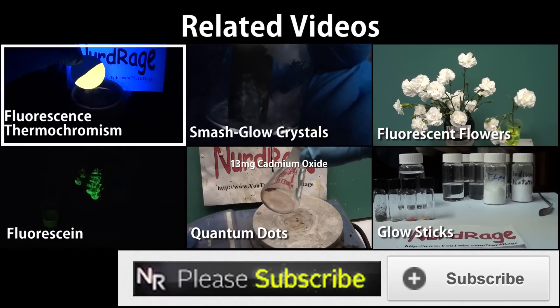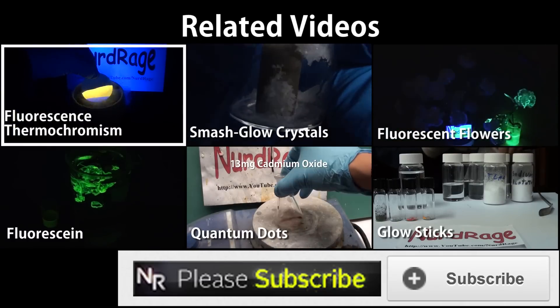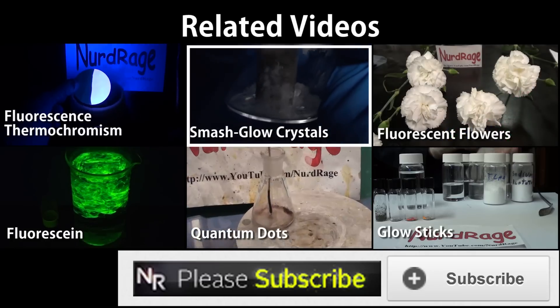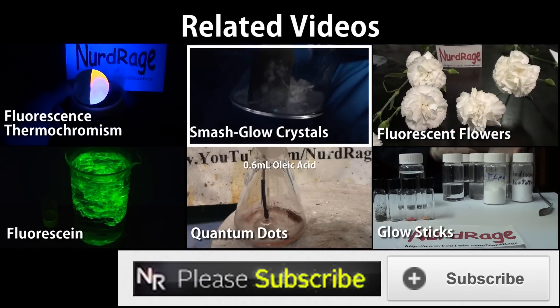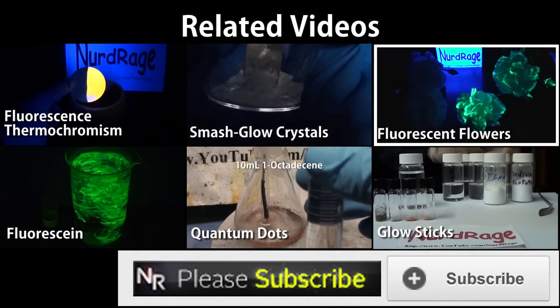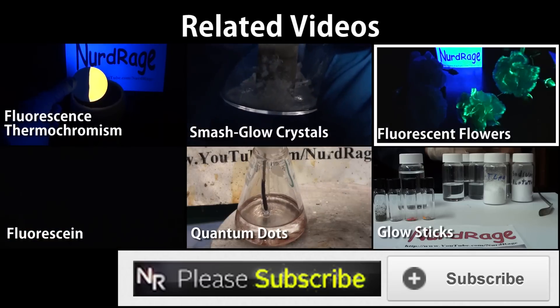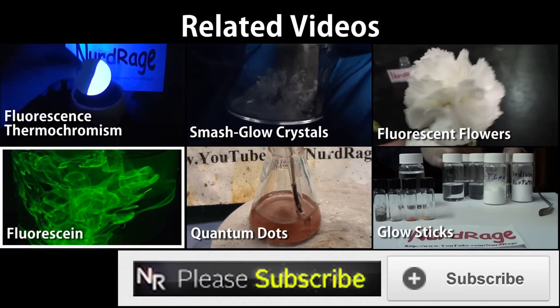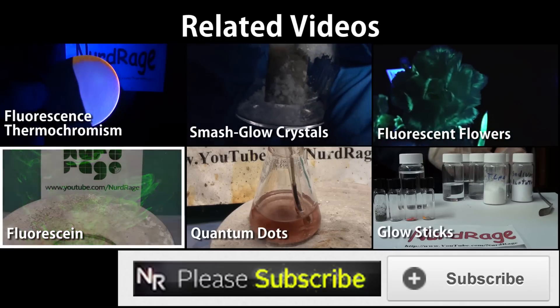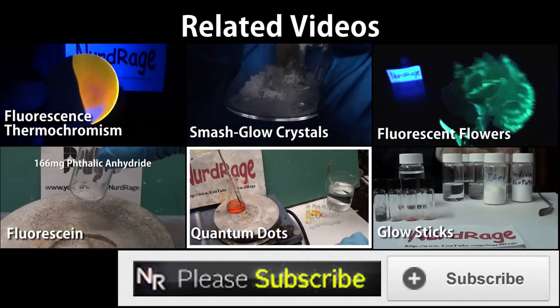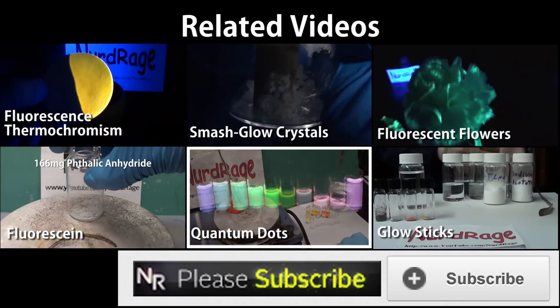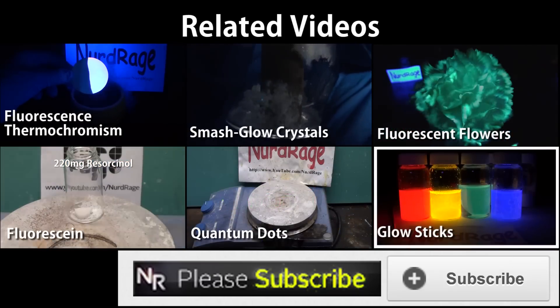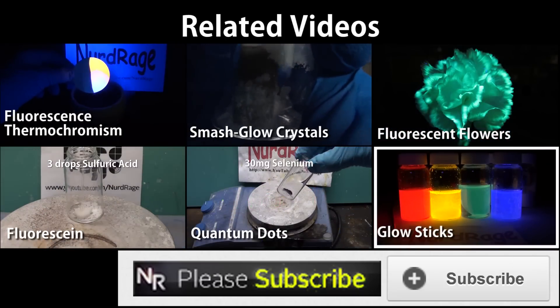In this video we're going to demonstrate temperature sensitive fluorescence, also known as fluorescence thermochromism. In this video we're going to make crystals that glow blue color when smashed. In this video we're going to make flowers glow in the dark under ultraviolet light using a fluorescent dye. In this video we're going to make fluorescein, a strongly fluorescent chemical. In this video we're going to make cadmium selenide quantum dots, a type of nanoparticle with interesting properties. In this video we're going to make glow sticks of various colors and explain a few interesting points about them.